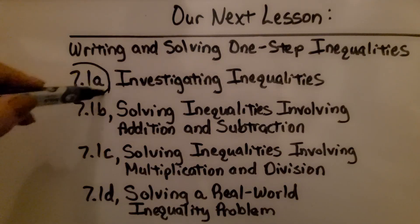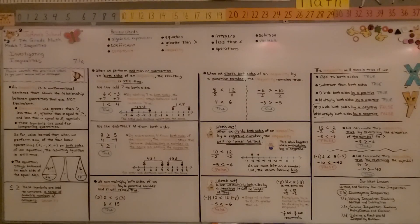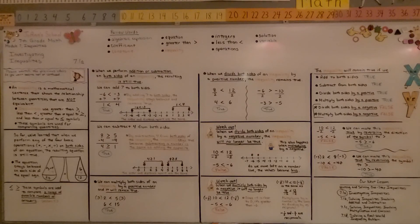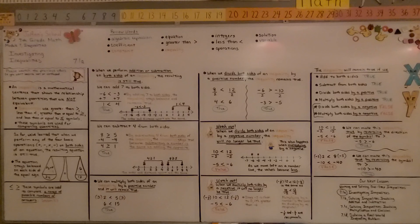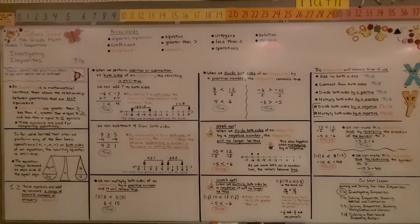We've finished 7.1a and we're going to move on to 7.1b, where we'll actually be solving inequalities involving addition and subtraction. Remember to be careful when multiplying or dividing both sides of an inequality by a negative number — we have to remember to flip that sign to the other direction, otherwise the inequality will not be true.